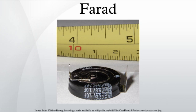Capacitance values of 1 picofarad or lower can be achieved by twisting two short lengths of insulated wire together. The capacitance of the Earth's ionosphere with respect to the ground is calculated to be about 1 farad.